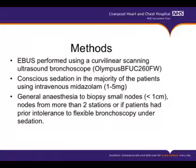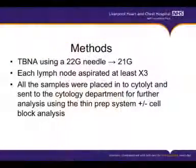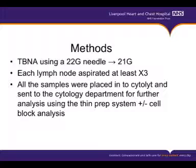Dr. Rice showed the EBUS scope yesterday — we've got a similar system. It's a curvilinear scope; we've got an Olympus set. We tend to do most of our EBUS procedures on conscious sedation using midazolam, and we reserve general anaesthetic for patients with particularly small nose, for biopsies in more than two lymph node stations, or if they had previous intolerance to sedation with flexible bronchoscopy. The needle we use for trans-bronchial needle aspiration was initially a 22-gauge needle, which works very well for lung cancer. We've now got a 21-gauge needle, which we tend to use more frequently in isolated mediastinal lymphadenopathy, as we can get quite good core specimens. We tend to aspirate each lymph node on three occasions and use thin prep and cell block analysis. We do not have an on-site cytology service.